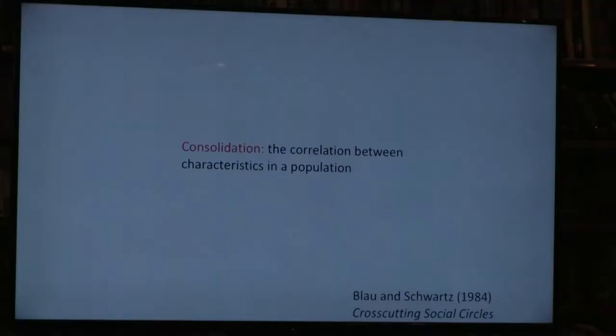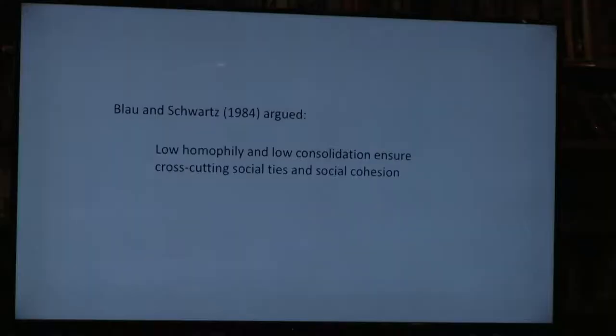In this paper with Linda, we're varying consolidation. Consolidation first appears in Blau and Schwartz's work, The Cross-Cutting Social Circles, where they make the strong statement that consolidation along with homophily are key parameters for network formation and social cohesion. Specifically, they argue you need low homophily and low consolidation to ensure cross-cutting ties between diverse groups—a necessary condition for social cohesion. The logic: if I don't select friends based on similarity, I'll have a diverse group; if I live in a society where different traits are uncorrelated, I can still run into people with different incomes at a neighborhood bar.